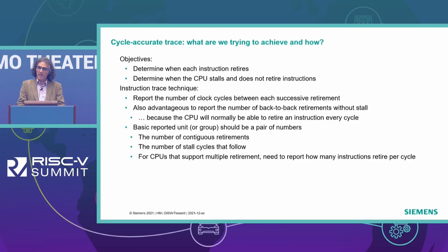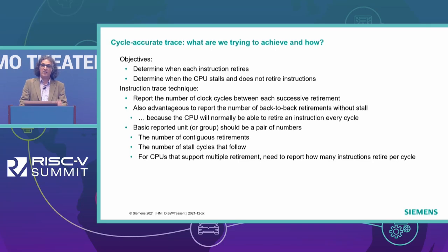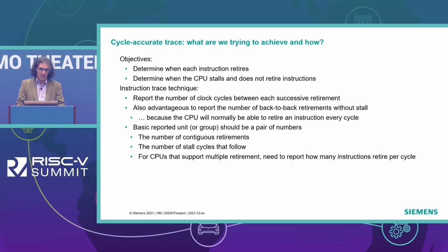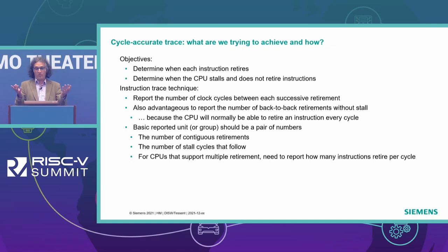The approach for conveying this information efficiently is that the basic reporting unit consists of pairs of numbers: one number describes how many instructions retired contiguously, followed by the number of cycles that followed. For superscalar designs that support multiple retirements, we also need to report how many instructions retired every clock cycle, since depending on the instruction mix, you may not be able to retire the maximum number in a given cycle.